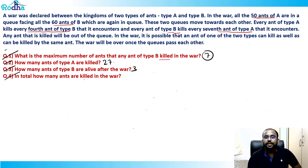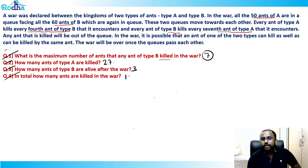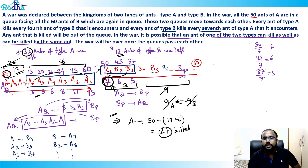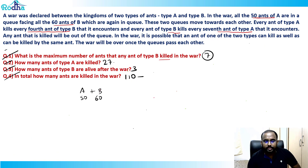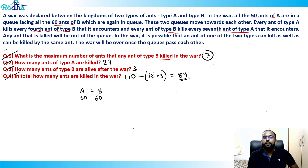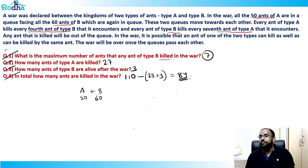Question 4: How many total ants are killed? Total ants = 50 + 60 = 110. Survivors: 23 of type A and 3 of type B = 26 total survivors. So 110 minus 26 = 84 ants are killed in total.